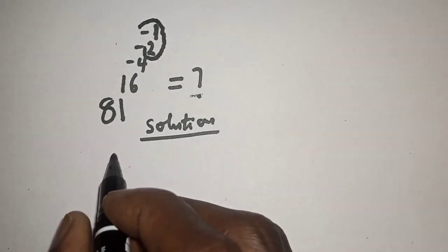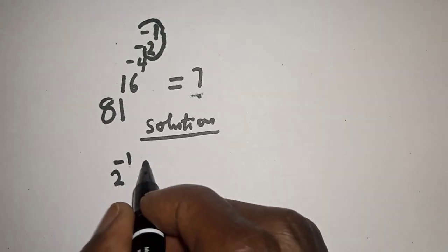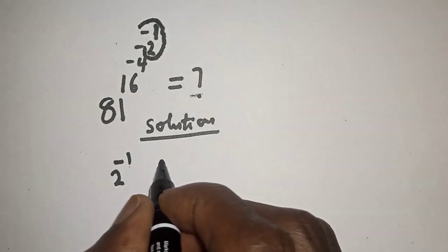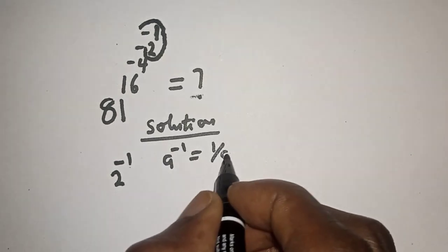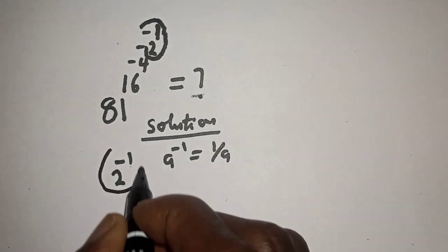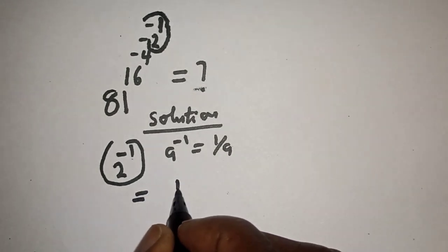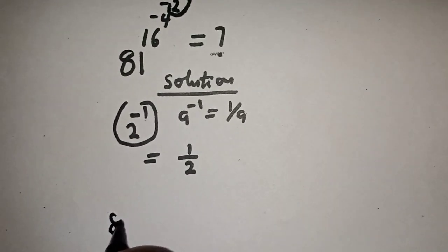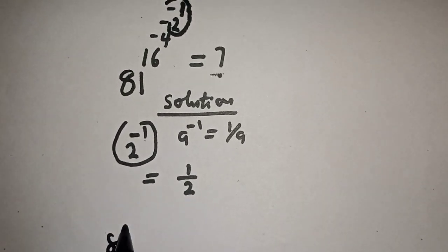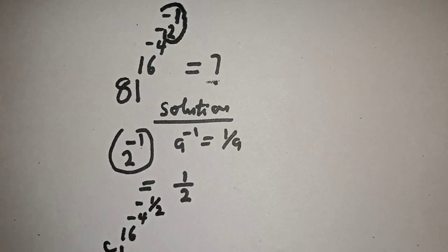Let's evaluate 2 raised to power minus 1. Take note that if you have a raised to power minus 1, this is equal to 1 over a. Therefore 2 raised to power minus 1 is equal to 1 over 2. Now let's substitute: we have 81 raised to power 16 raised to power minus 4 raised to power minus 1 over 2.